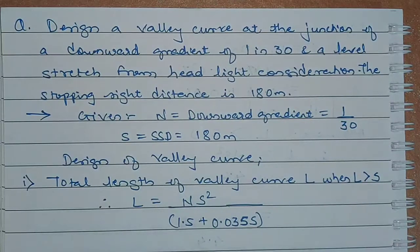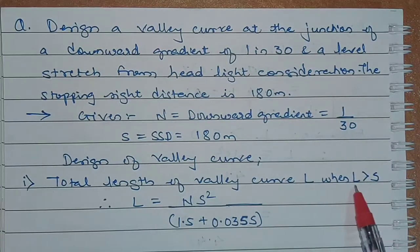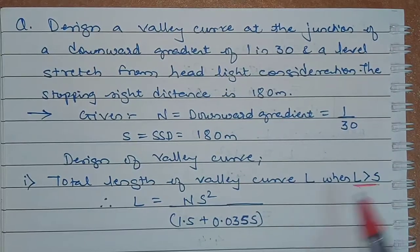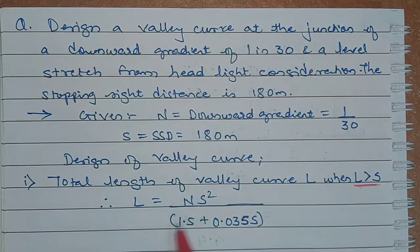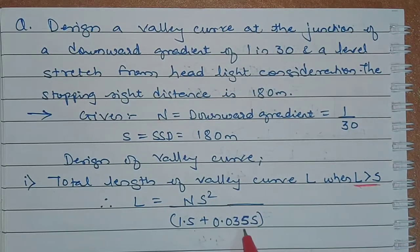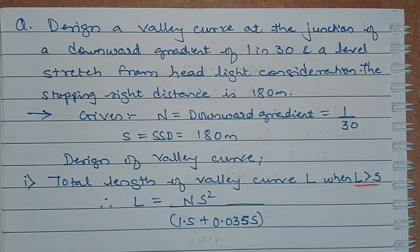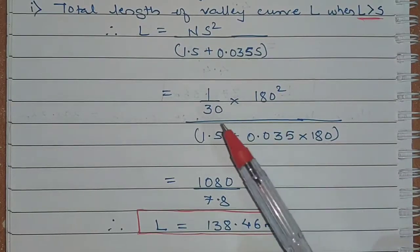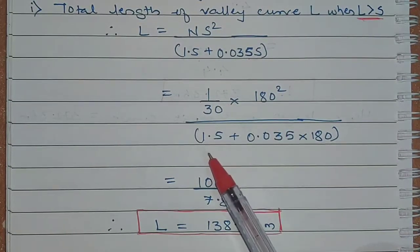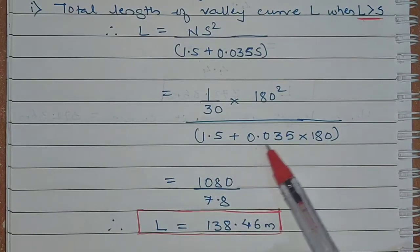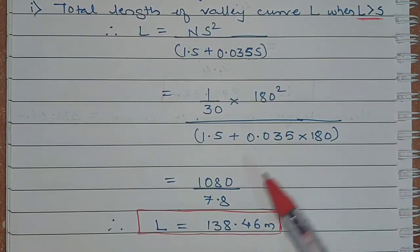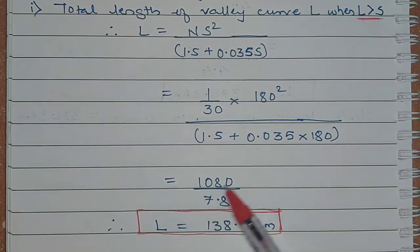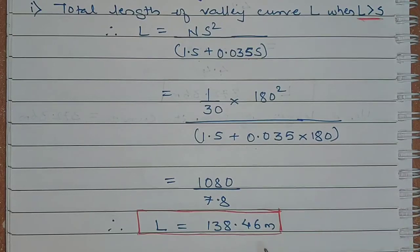For the first case when the total length of the valley curve L is greater than the stopping sight distance, using the formula L equals N square upon 1.5 plus 0.035 multiplied by S. Substituting the values, we get L equals 138.46 meters.